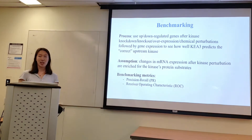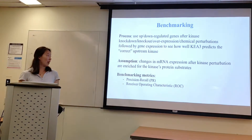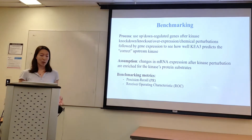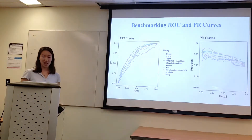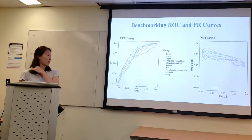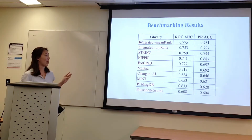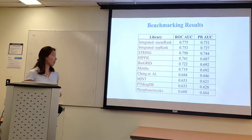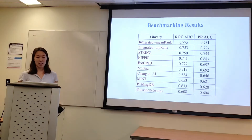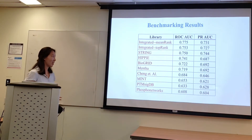To benchmark the KIA-3 library, genes that were known to be up or down regulated after kinase perturbations were used to determine how well KIA-3 was able to predict the correct upstream kinase, under the assumption that mRNA expression of a kinase protein substrate changes when that kinase is perturbed. To quantify the library's performance, we use ROC and PR curves. We use the area under the ROC curve to determine performance. This is a list of the libraries organized by area under ROC curve from highest to lowest. The two integrated libraries, mean rank and top rank, outperformed all the individual libraries, and of the individual libraries, STRING performed the best. Overall, the ROC AUCs show that the KIA-3 libraries are useful and that the benchmarking metric that we used also works.